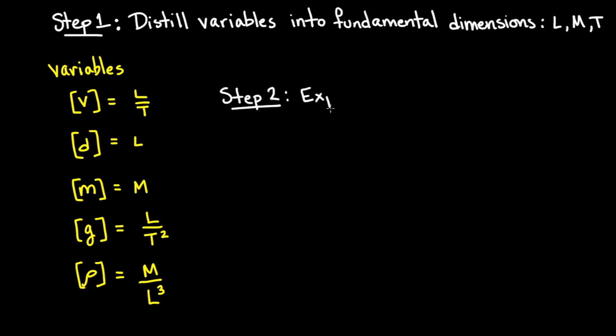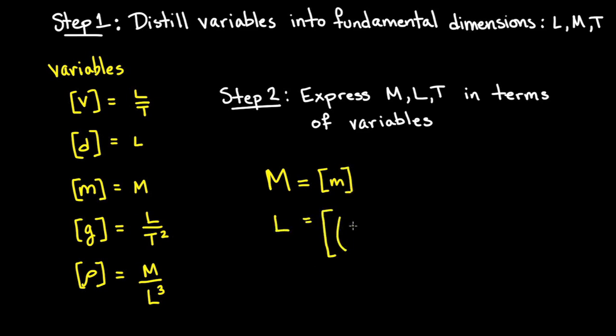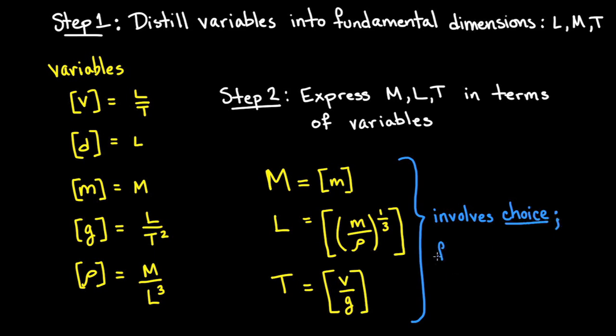The second step is to express the fundamental dimensions of mass, length, and time in terms of our variables. We can write m as little m. We can write l as mass divided by density to the one-third power. We can write t as velocity divided by gravity. We had many choices as to how to write these fundamental dimensions in terms of our variables. In the end, it doesn't matter which expressions you choose.